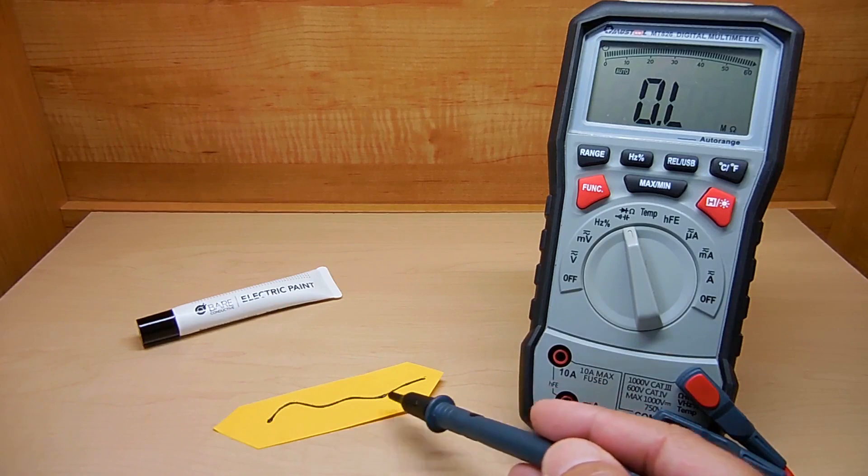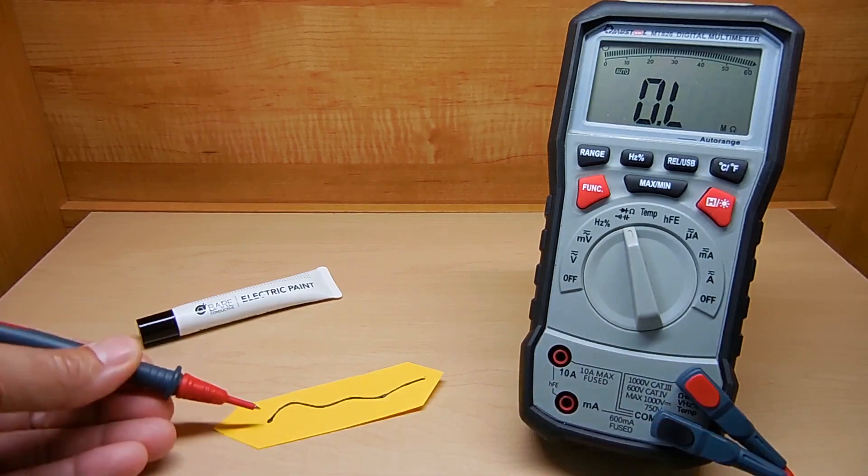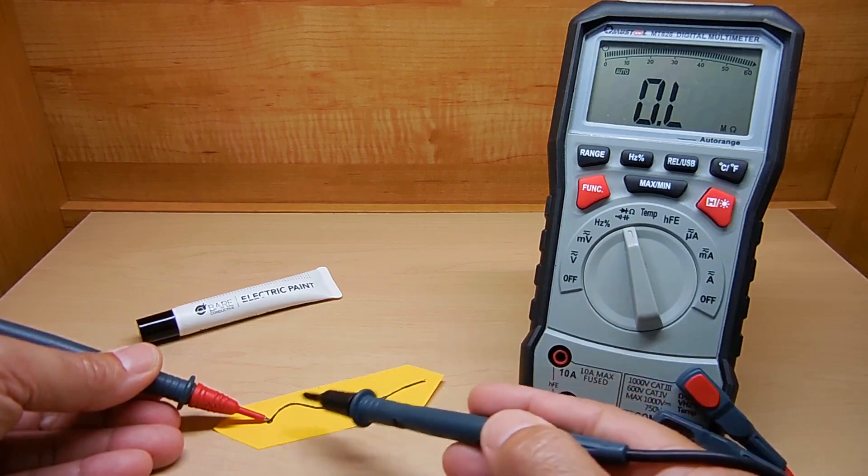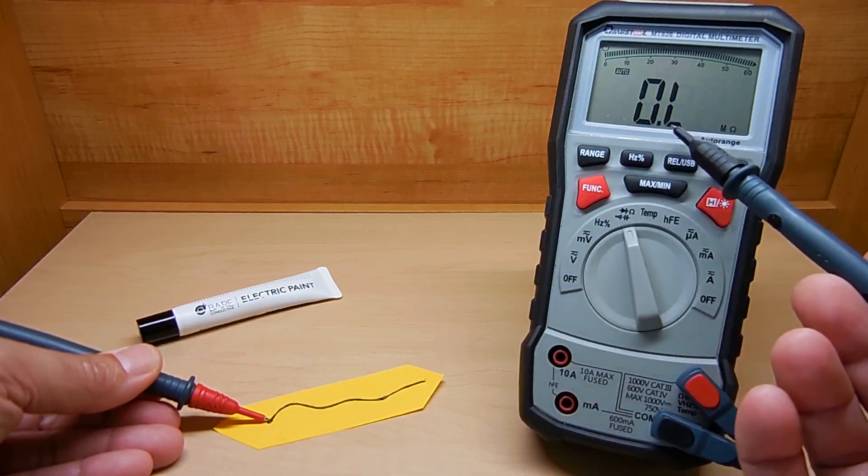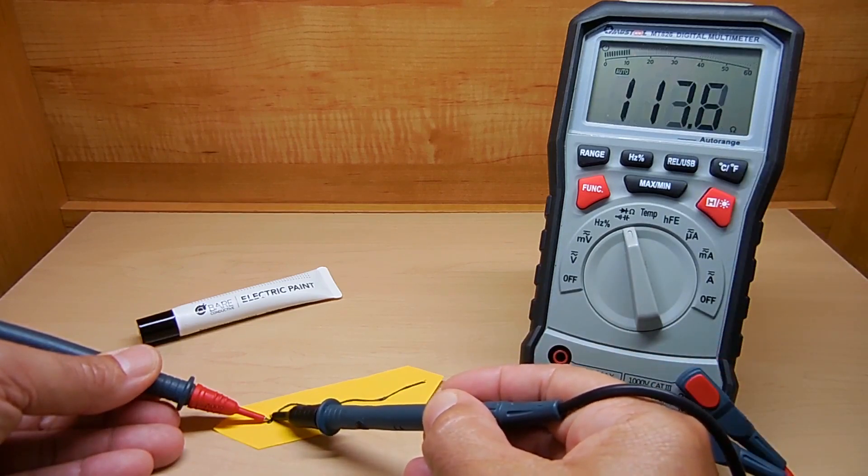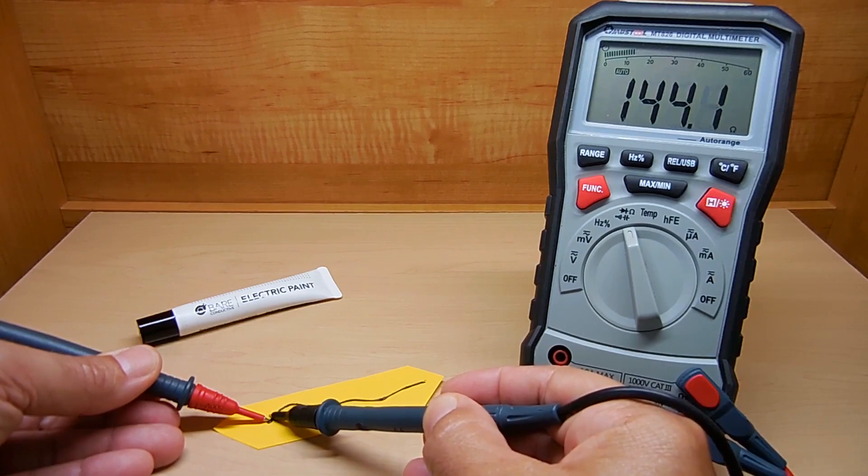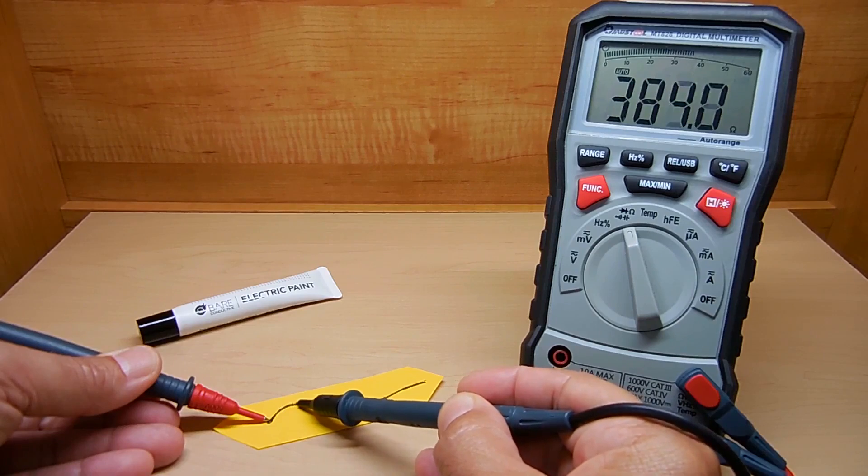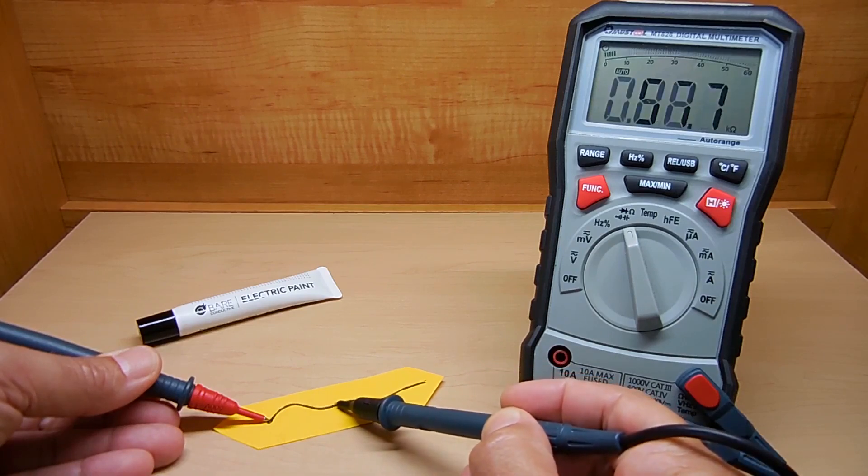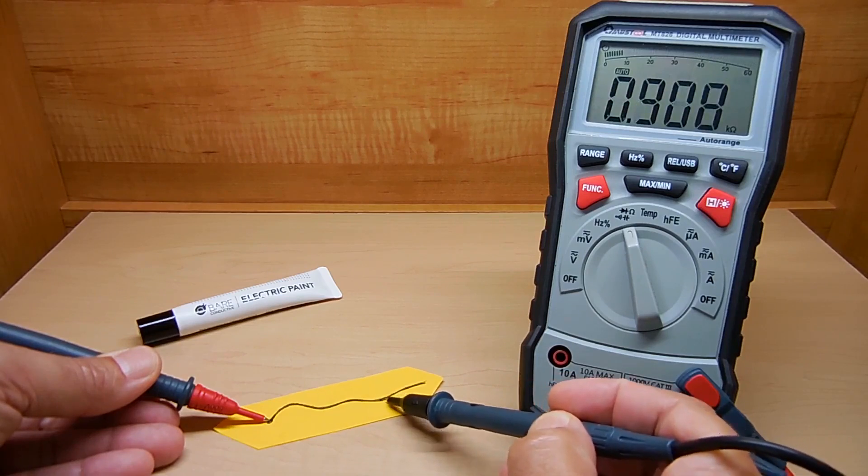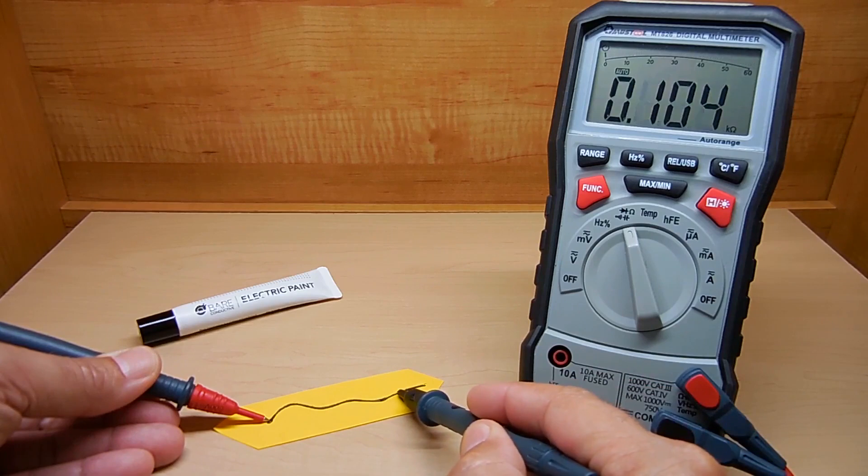Now, to show you how this paint worked, I made a squiggly line and allowed it to dry. I'm going to take one probe, touch it right here, take this probe, and I'm going to move it along the line, over here. And here, you can observe the resistance reading. Now, very close, you can see it's about 140 ohms, and as I'm moving along that line, you can see resistance increasing. And this is why you would not want to use this on a circuit.